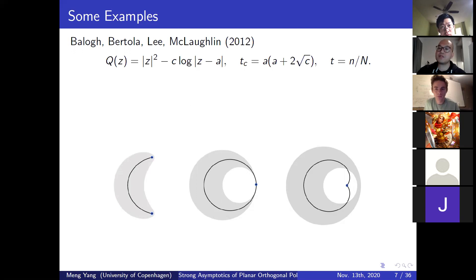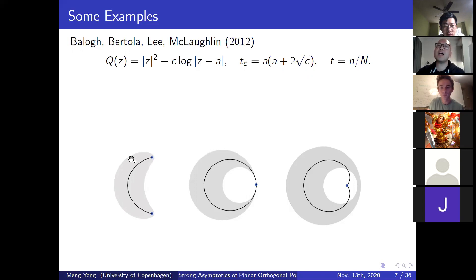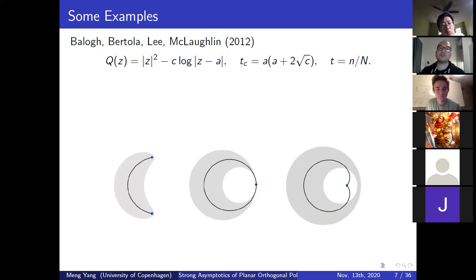An audience member asks: what is the gray area representing? The speaker clarifies: the shaded region is the droplet, and the solid line is the limiting locus — the limiting distribution of zeros for the corresponding orthogonal polynomials.